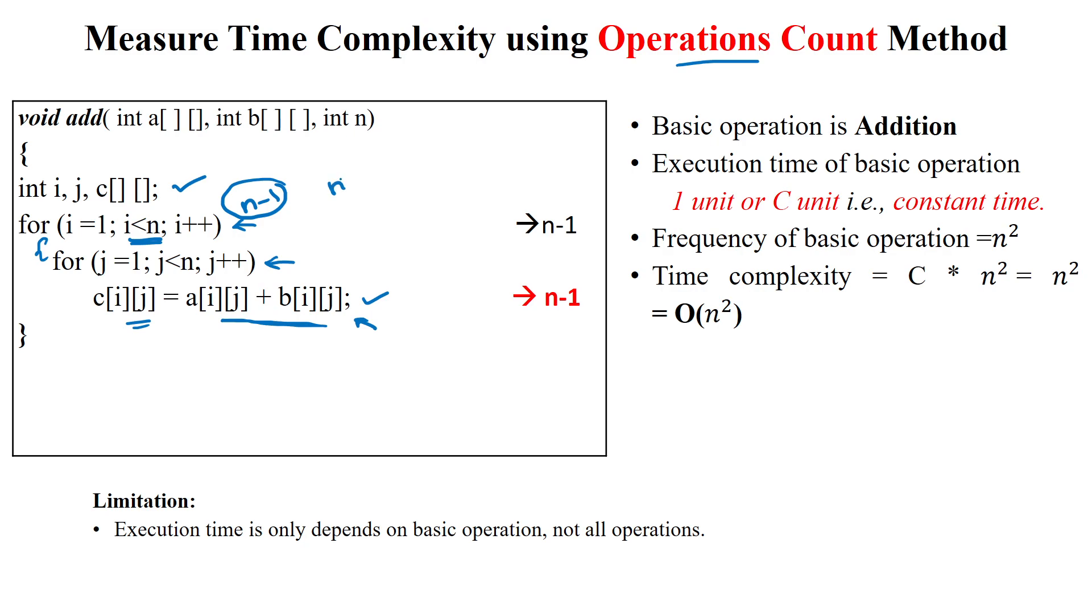At the nth time, it will exit. And so, for n minus one number of times, it will get inside the loop.